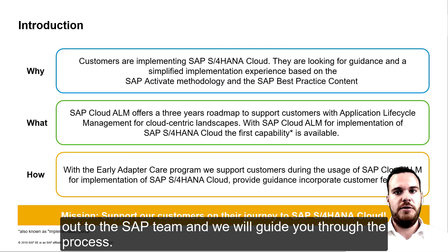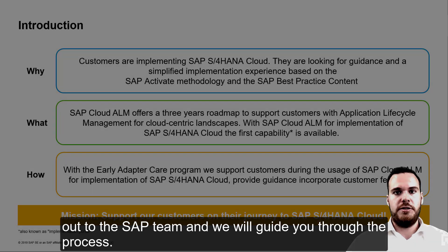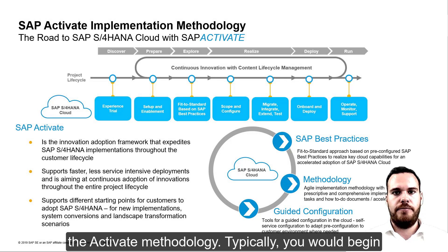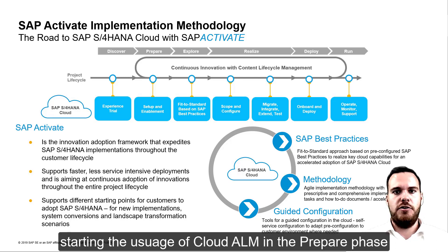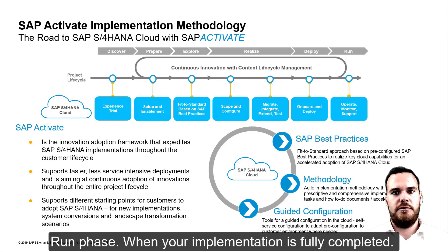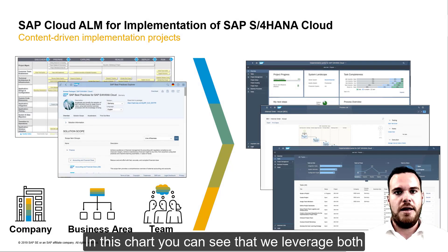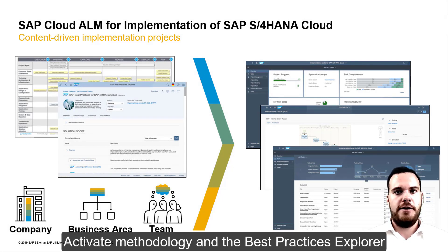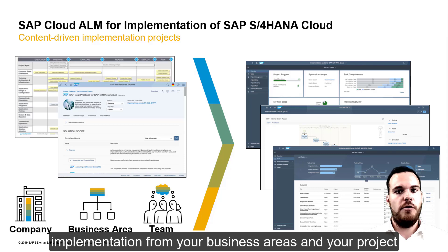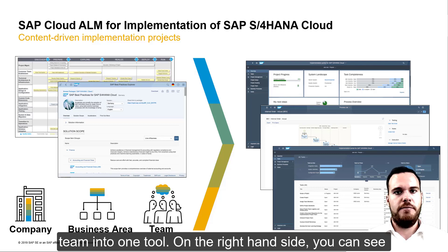Just reach out to the SAP team and we will guide you through the process. You may also remember this slide where I showed you the Activate methodology. Typically, you would begin using Cloud ALM in the Prepare phase, and it helps guide you smoothly from start to the Run phase when your implementation is fully completed. In this chart, you can see that it leverages both the Activate methodology and Best Practice Explorer to map the demand of your company from your business areas and your project team into one tool.